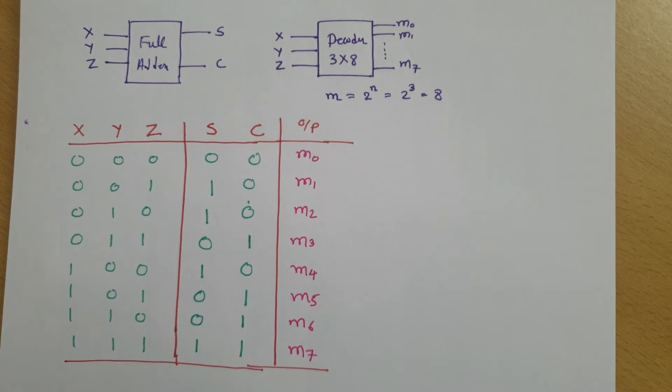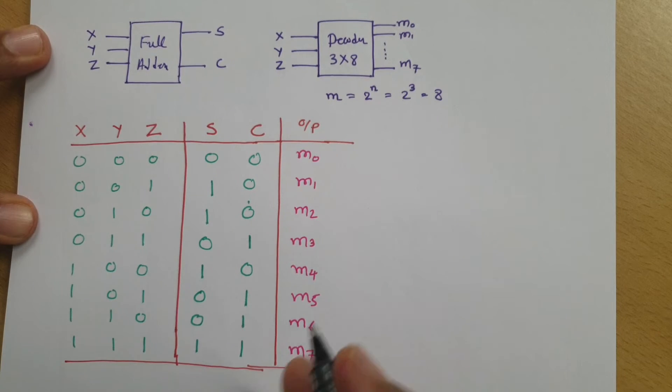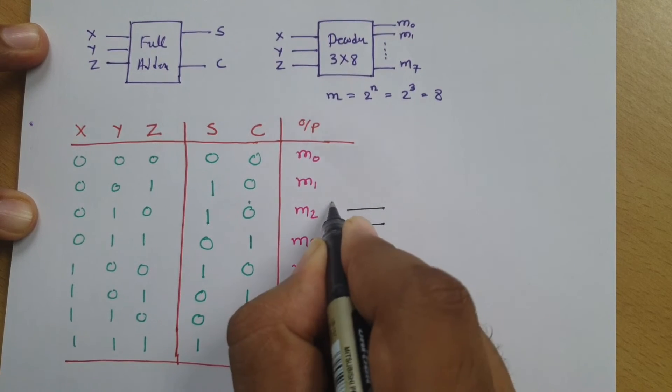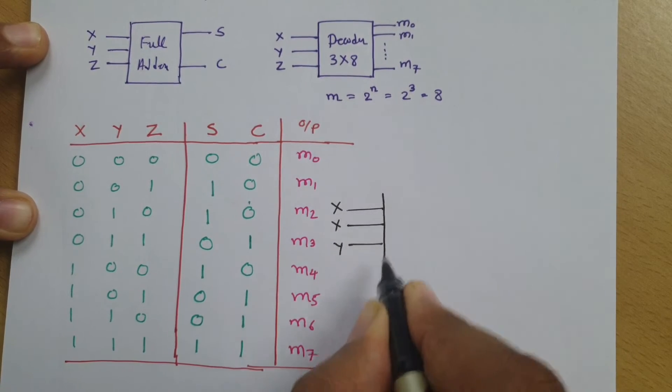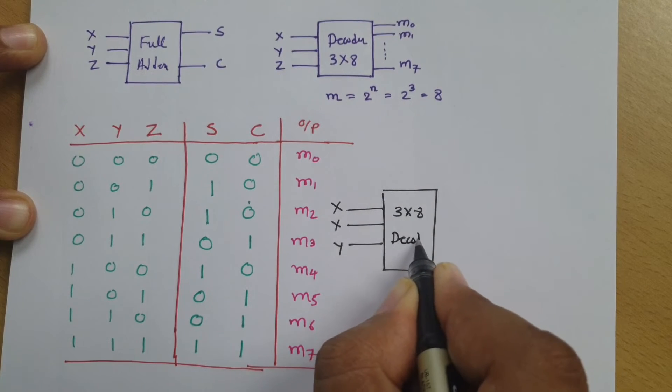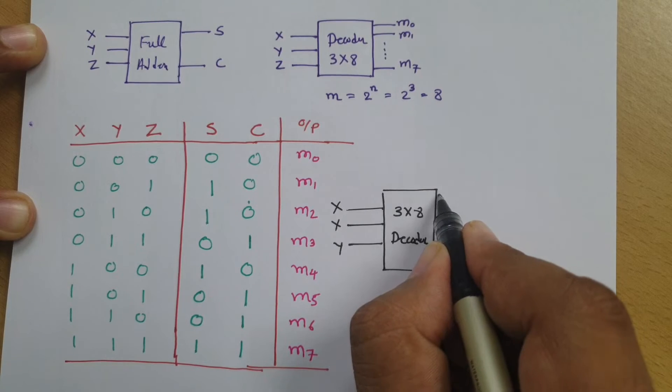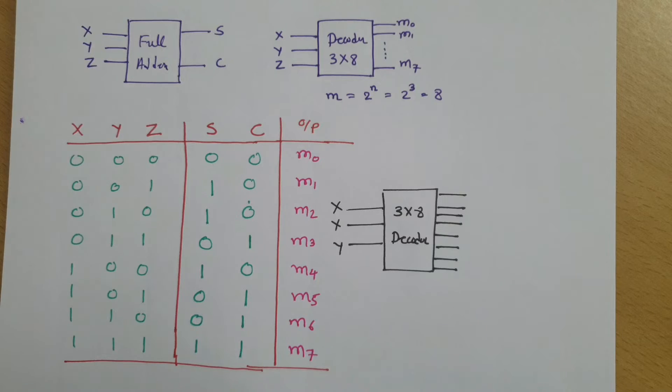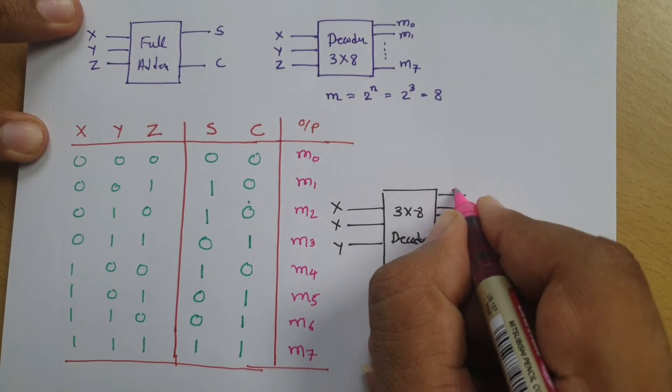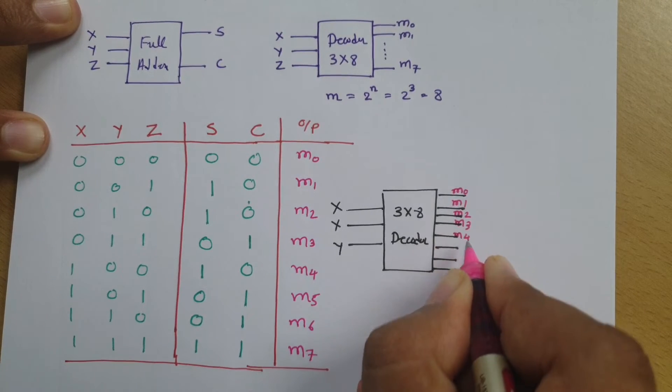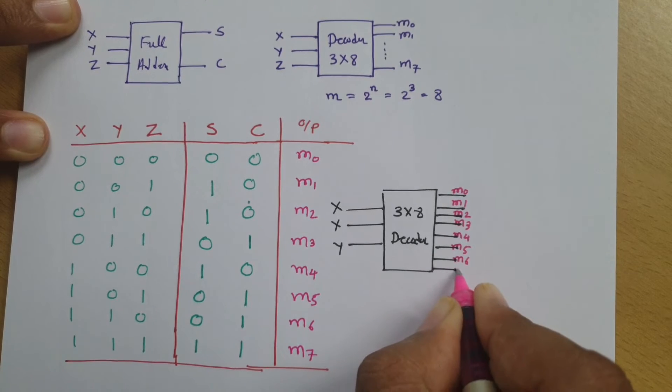So here what we will be doing, we will be making circuit with the extension of decoder now. Here we have decoder with 3 inputs x, y, and z. This is my 3 by 8 decoder. And here you will be finding there are 8 outputs. Let me give naming to these outputs: M0, M1, M2, M3, M4, M5, M6, and M7.